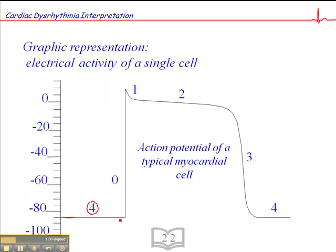Then what happens is when a wave of electrical depolarization hits the cell, so this resting muscle cell, it rapidly undergoes depolarization. And this is phase 0. So this is phase 0 depolarization.